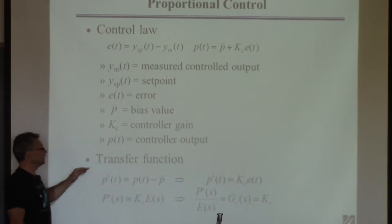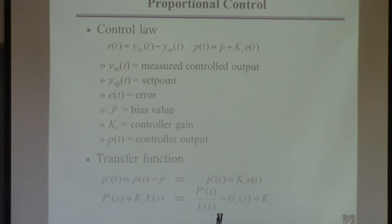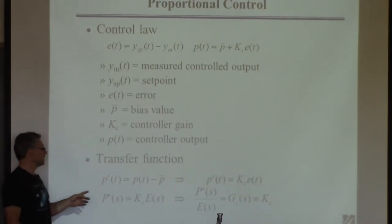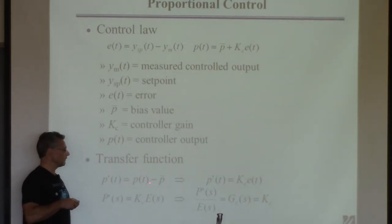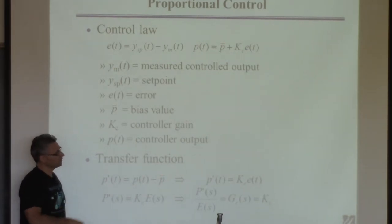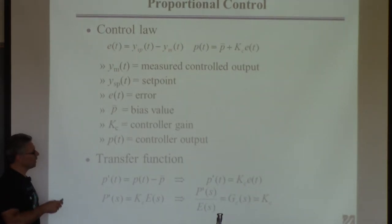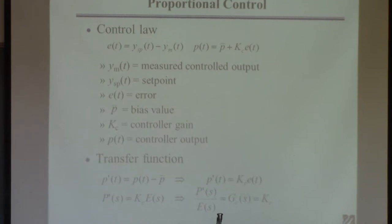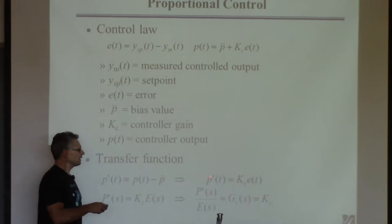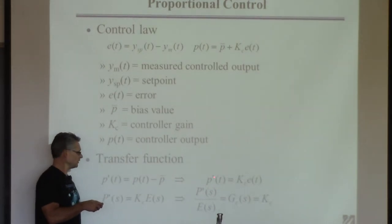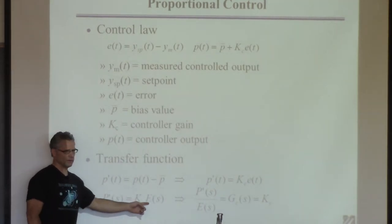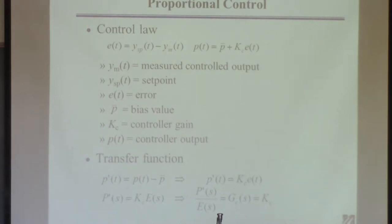Now we represent the proportional controller as a transfer function. Because transfer functions use deviation variables, define P′ as the actual controller output minus the nominal bias P-bar. That lets us write the equation as P′ = Kc · E. The error E is already a deviation variable since it's Y minus Y, so no further conversion is needed.